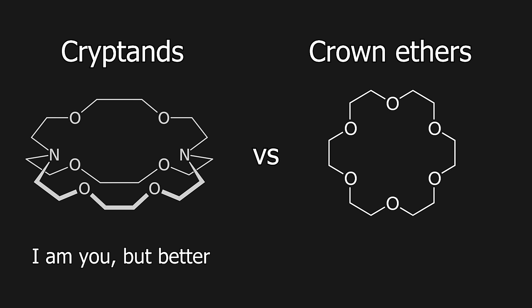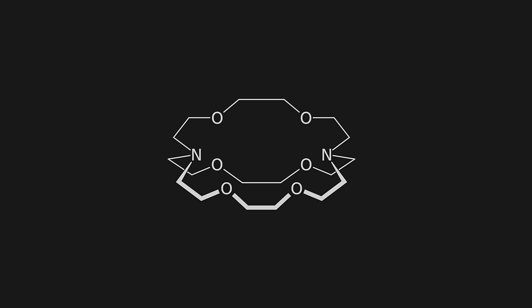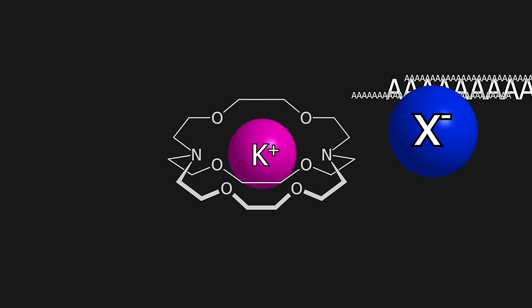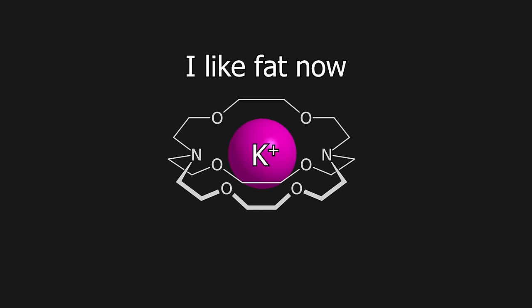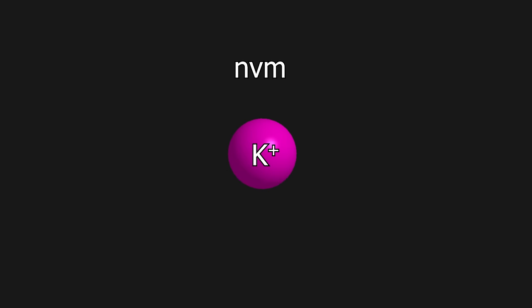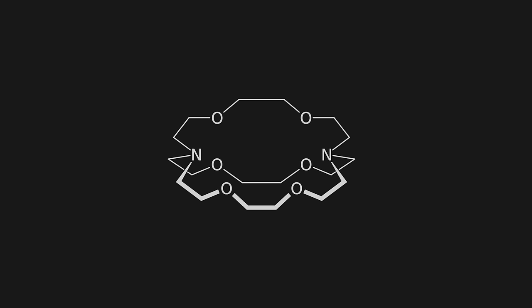By binding these cations, cryptands increase the reactivity of the corresponding anions in these salts, since they effectively break up ion pairs. The binding of cations by cryptands also makes them more lipophilic, therefore allowing these salts to be dissolved in organic solvents, in which they normally wouldn't. They can even be used to isolate alkalides, for example the sodide anion.